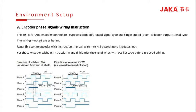This HSI for the ABZ encoder connection supports both differential signal type and single-ended signal type. Regarding encoders with an instruction manual, wire it to the HSI according to its datasheet. For those encoders without an instruction manual, identify the signal wires with an oscilloscope before proceeding with wiring.